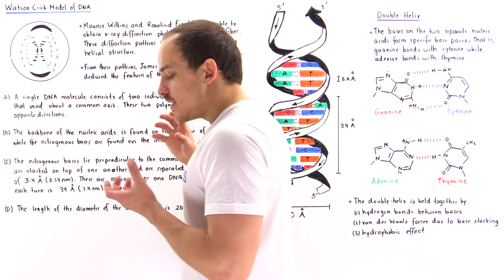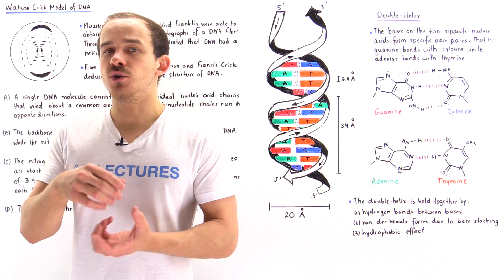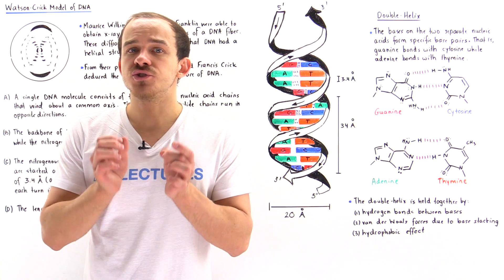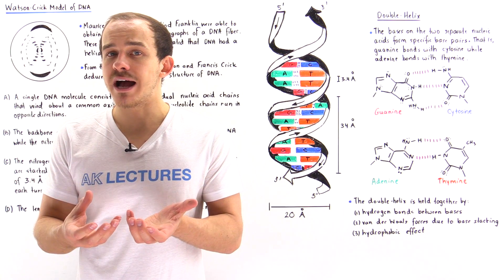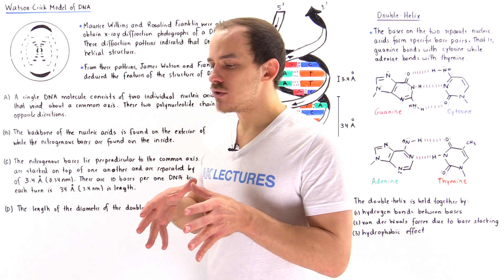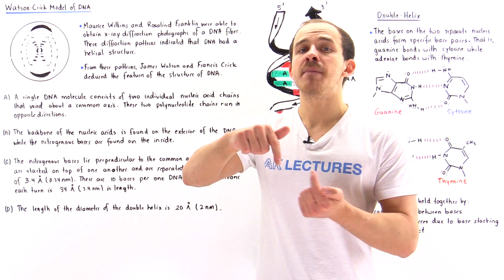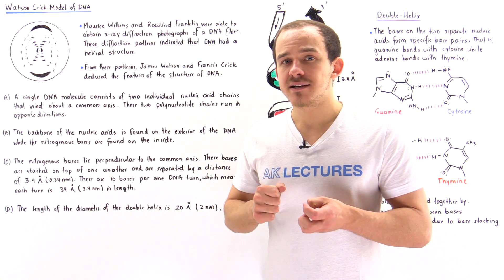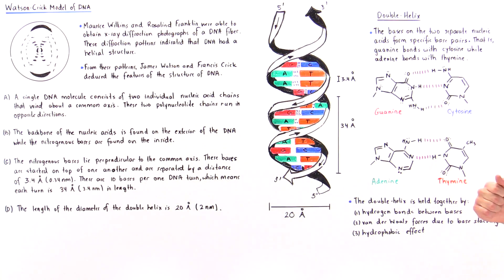Point A: if we examine any DNA molecule, the DNA molecule consists of two individual strands of nucleic acid. So we have two polynucleotide chains in a single DNA molecule. These two chains essentially run in an anti-parallel fashion and wind around a common axis, as shown in the following diagram.